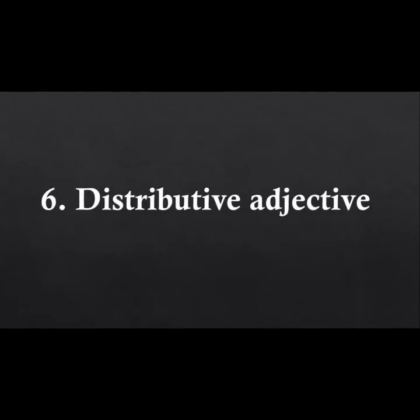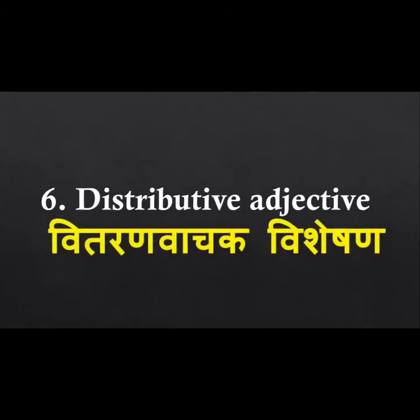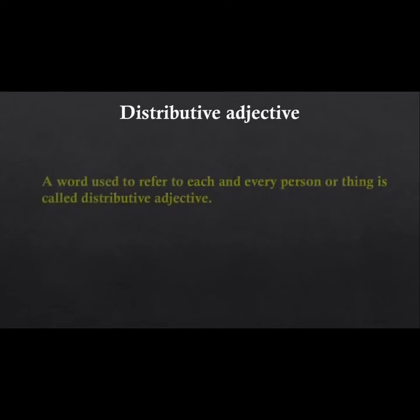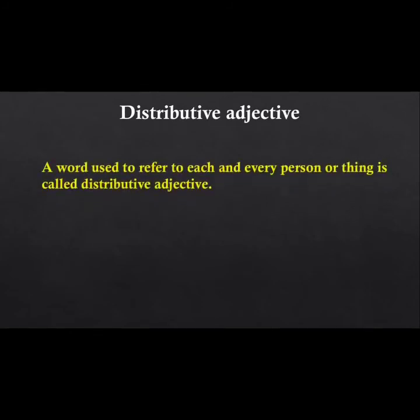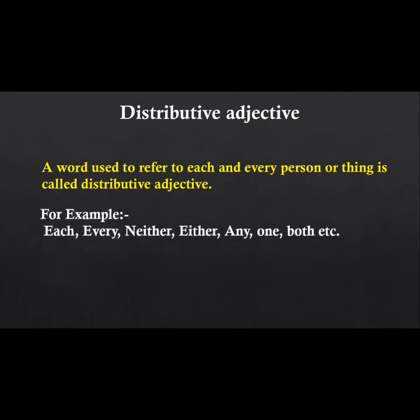The sixth type is distributive adjective, called 'vitaran vachak visheshan' in Hindi. A word used to refer to each and every person or thing is called a distributive adjective. Examples include: each, every, neither, either, any, one, both, except.